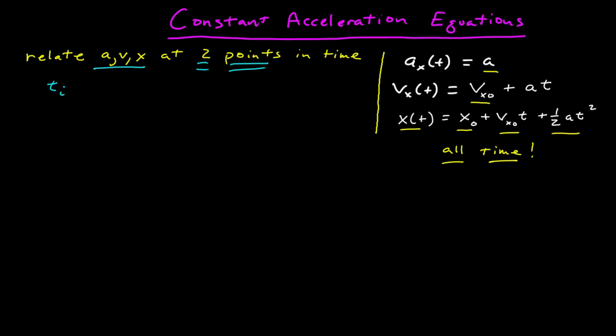I'll call my first time some initial time, t with a subscript i, and some final time, t with a subscript f. Another parameter that I'm often interested in is the time interval, which is t final minus t initial. I'm going to go kind of slowly so we keep the notation very clear of what we're doing.